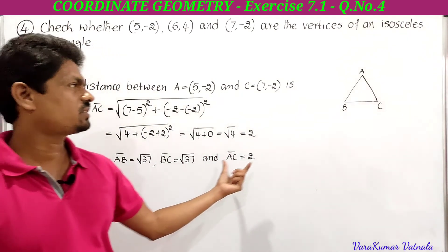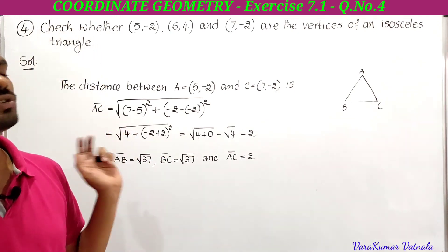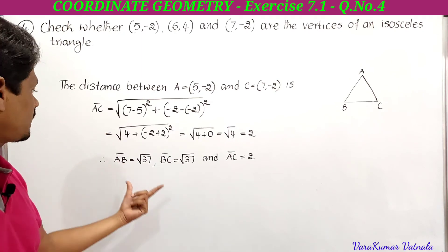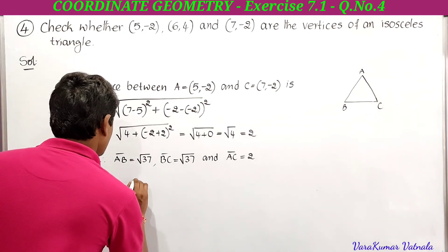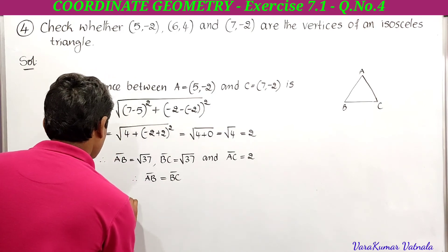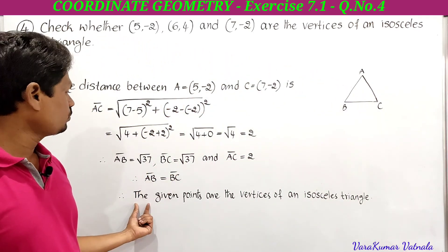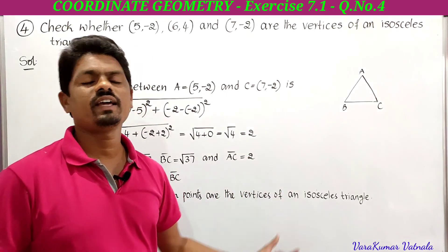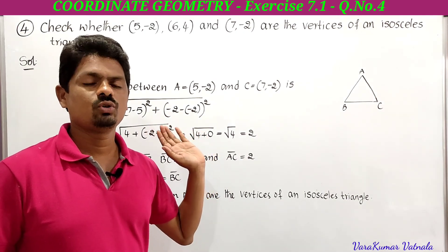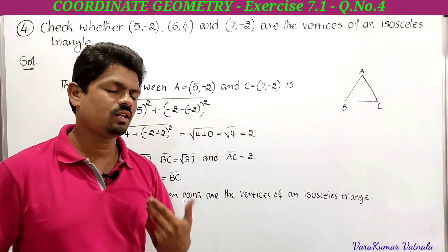Therefore AB = √37, BC = √37, and AC = 2 units. The lengths of AB and BC are equal. Since a triangle in which any two sides are equal is an isosceles triangle, AB = BC, and therefore the given points are the vertices of an isosceles triangle. That's all — we'll meet in the next class with another problem. Thanks for watching.